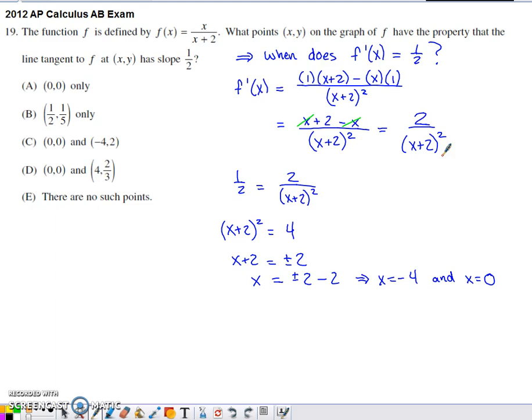What we want to know is when this derivative is equal to 1/2. So we set that derivative equal to 1/2, and now we've got an equation to solve. If I treat this like a proportion and cross multiply, I get an equation where I need to take the square root of both sides.